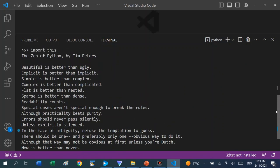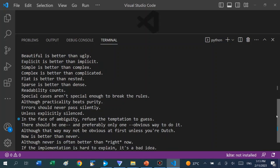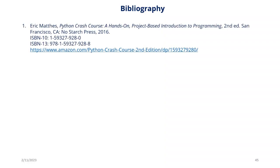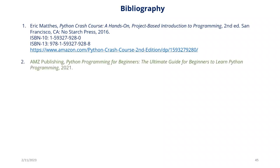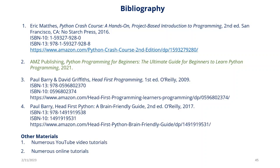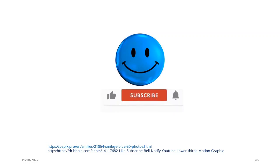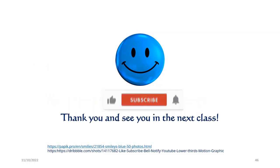If we say 'import this' to display the design of Python and press Enter, this is what you get: the Zen of Python by Tim Peters. Google Tim Peters to know his role in Python. The main textbook for the course remains the book of Eric Matthes, and a lot of the operators listed in this topic are from Python Programming for Beginners: The Ultimate Beginner's Guide by AMZ Publishing. So we've come to the end of class today. If you have enjoyed the lecture, please like, share, and subscribe for more videos. Thank you and see you in the next class.